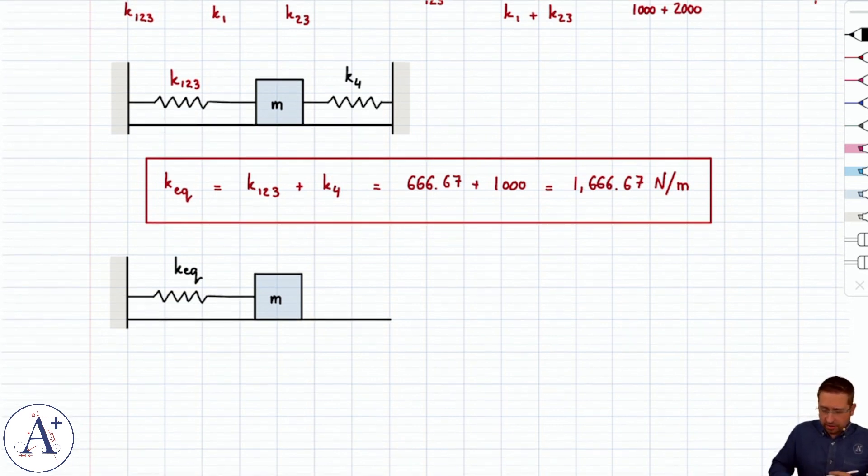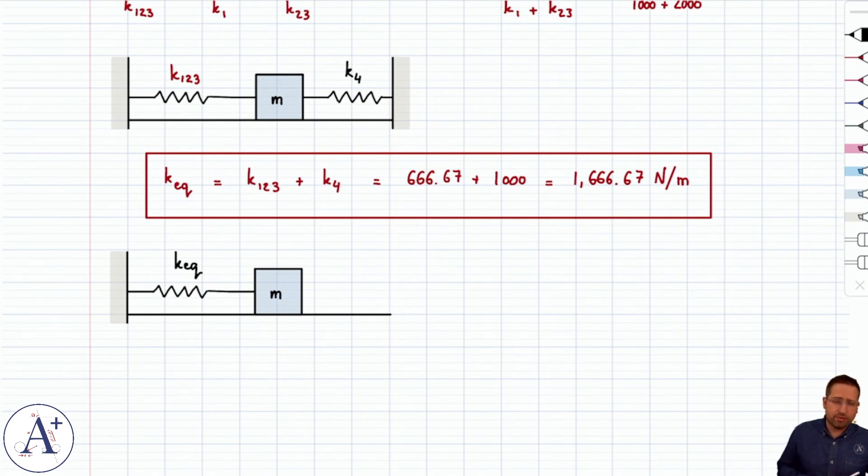So anyway, good little couple of formulas there to simplify these problems. And I would recommend just practice it a bit, make sure you can recognize springs in parallel, tell them apart from springs in series. And I would also recommend doing it step by step. Just always take maybe two or three springs that are in parallel, combine them, and then see what you have left.